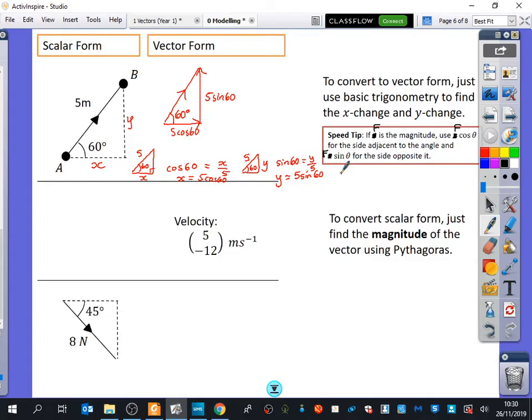So we haven't quite finished this, but we've now said it's going 5 cos 60 to the right. So that's going to be, the right would be 5 cos 60, and going up is 5 sine 60. I don't need to make either of these negative. Why?